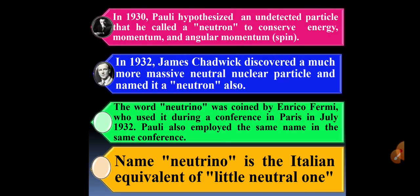In 1930, Pauli postulated an undetected particle that he called a neutron to conserve energy, momentum, and angular momentum.